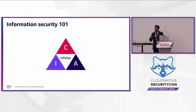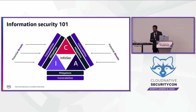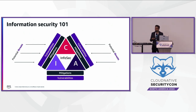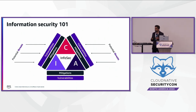Information security 101 — most of you have heard about it. CIA stands for confidentiality, integrity, and availability. Confidentiality means you're making sure that data is secure and accessible only to authorized users. Integrity means it's accurate and trustworthy. And with availability, you're making sure it's available only to authorized users whenever they need it. With threat modeling, you take a look at these three core principles and understand what are the potential threats and vulnerabilities in your system, and how you can mitigate them to go back to the core CIA triad framework.